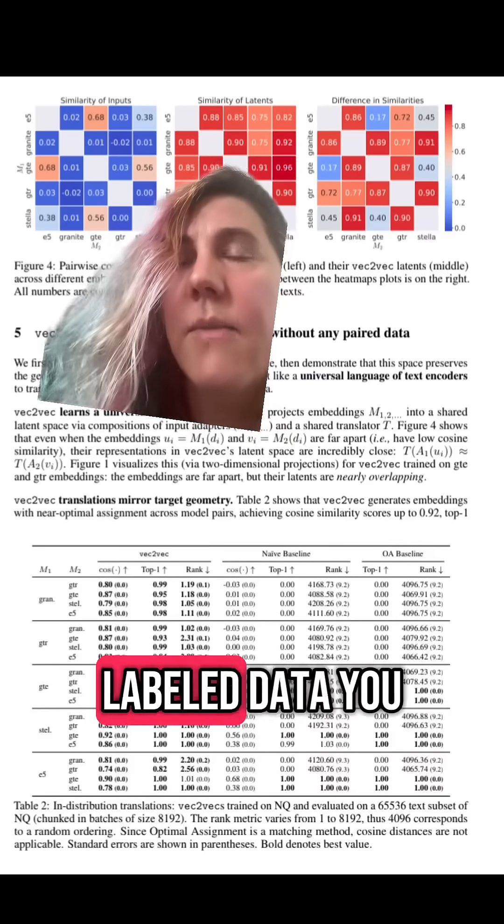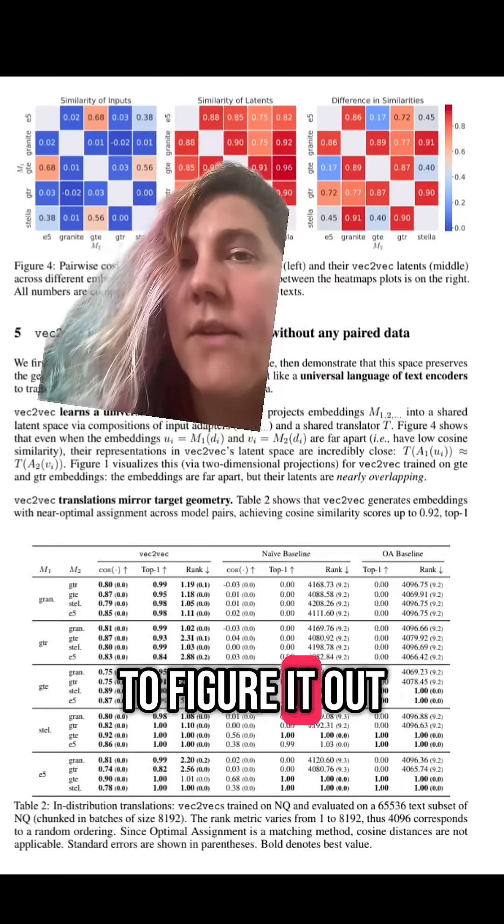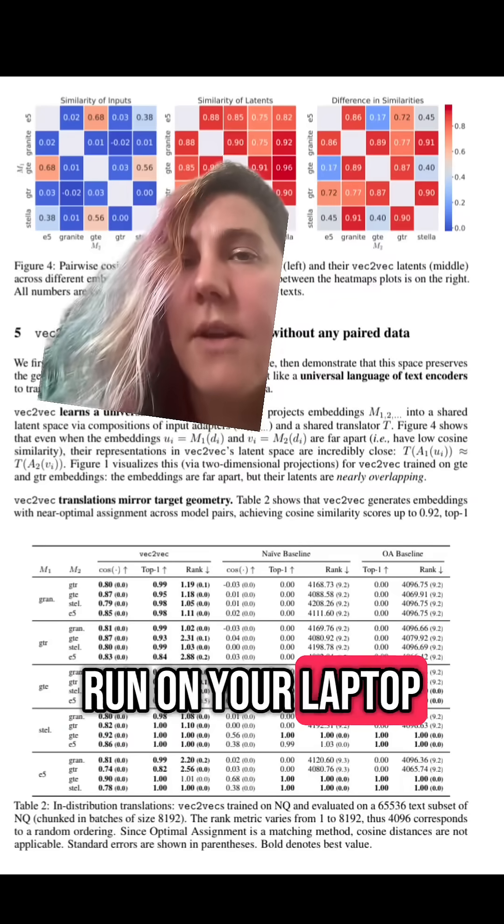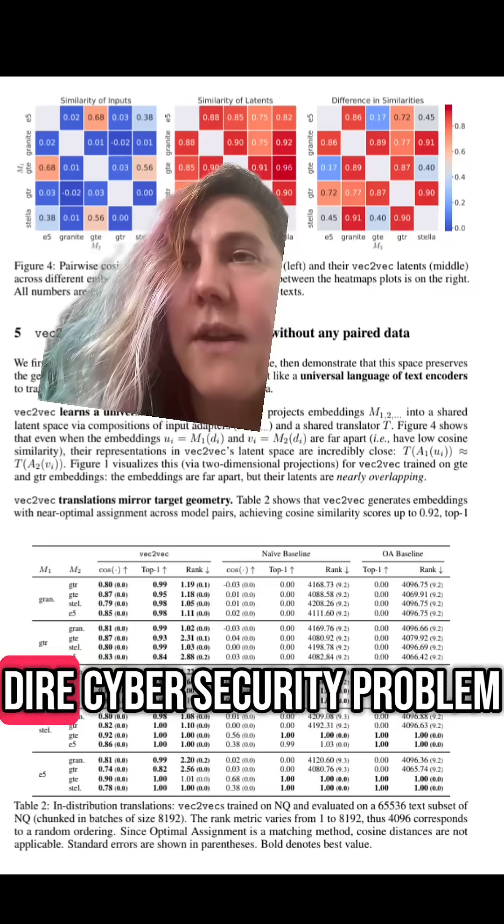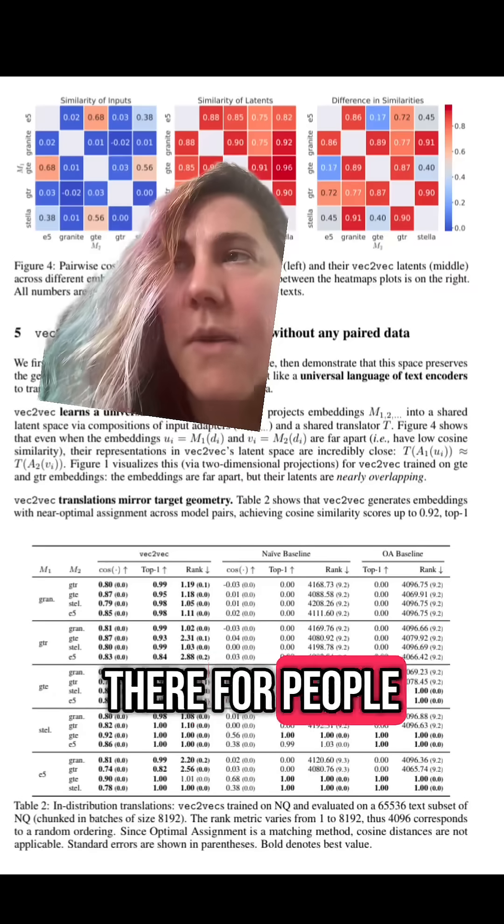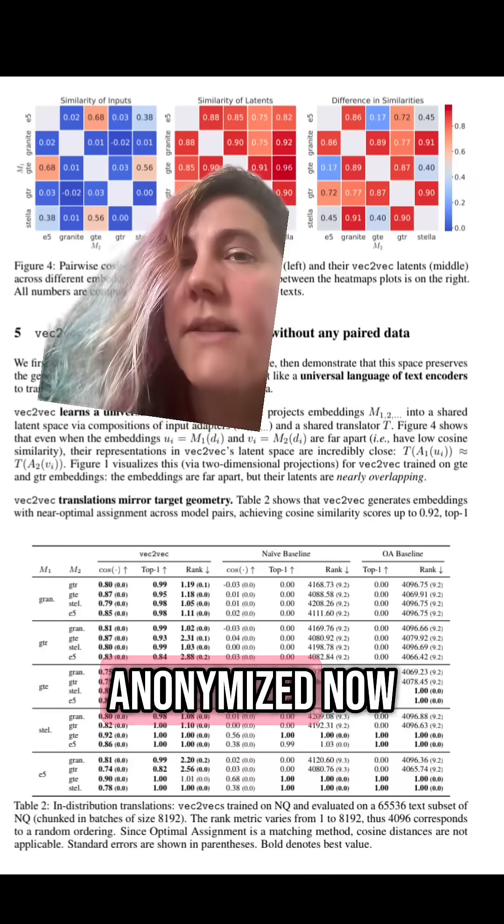Also, you don't need any labeled data. You don't need to know some of the embedding space to figure it out. You can just do vec to vec. And it's a small model. It'll run on your laptop. So this is kind of a dire cybersecurity problem in terms of all of the open data sets that are out there for people to learn machine learning with are basically de-anonymized now.